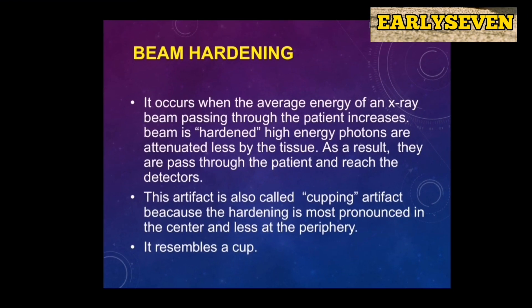The other type of artifact is beam hardening. Beam hardening occurs when the average energy of an X-ray beam passing through the patient increases. The beam is hardened — high energy photons are attenuated less by the tissue, and as a result, they are passed through the patient.